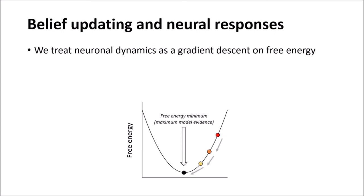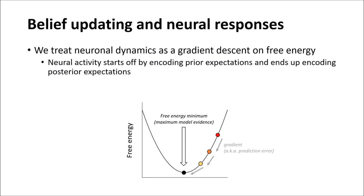Thinking of this in terms of prediction errors, the prediction error is equal to the negative free energy gradient. And we continue updating our beliefs until the prediction error is zero, which means that we've reached the free energy minimum. And so the idea is that neural activity starts off by encoding prior expectations and ends up encoding posterior expectations.